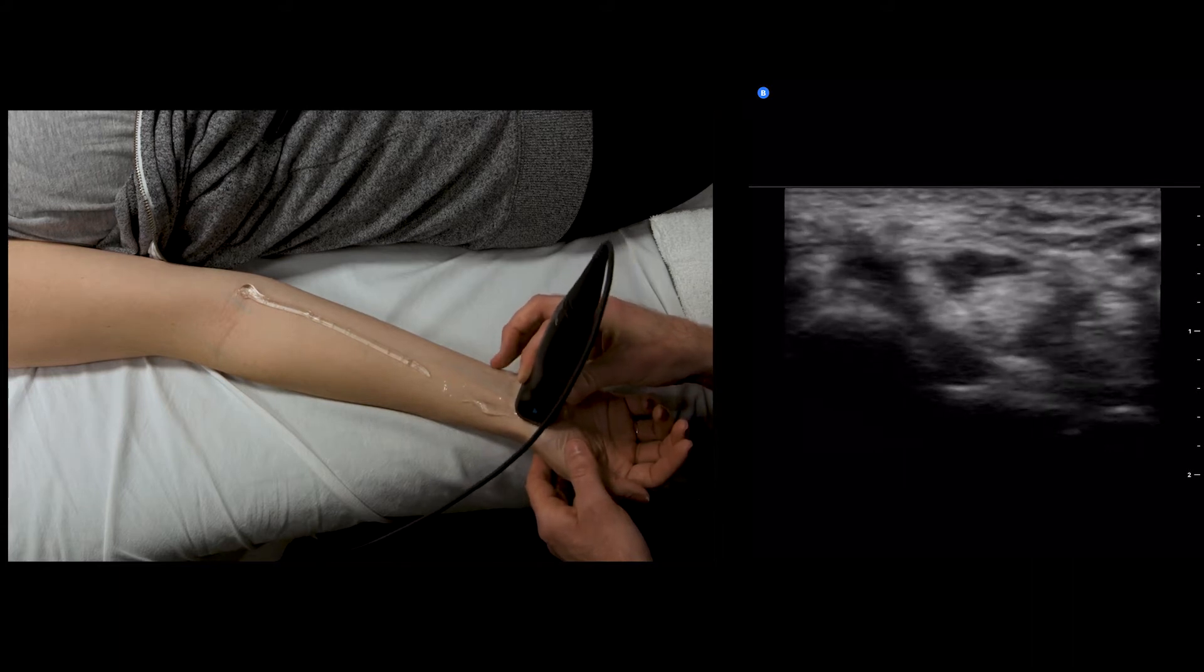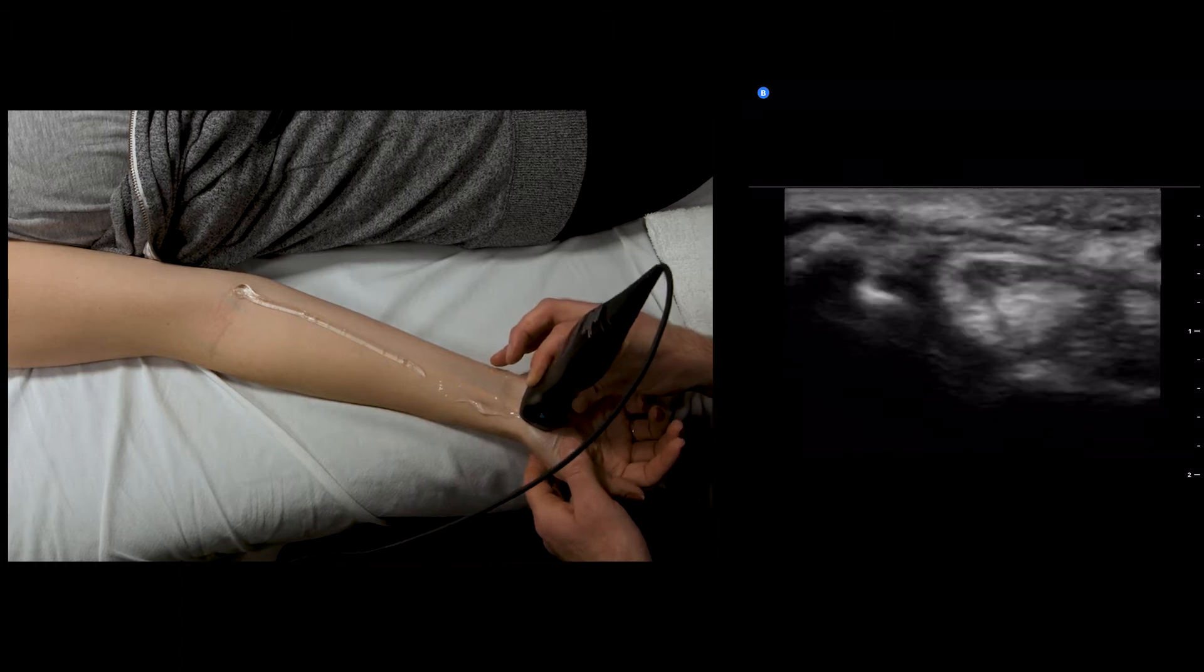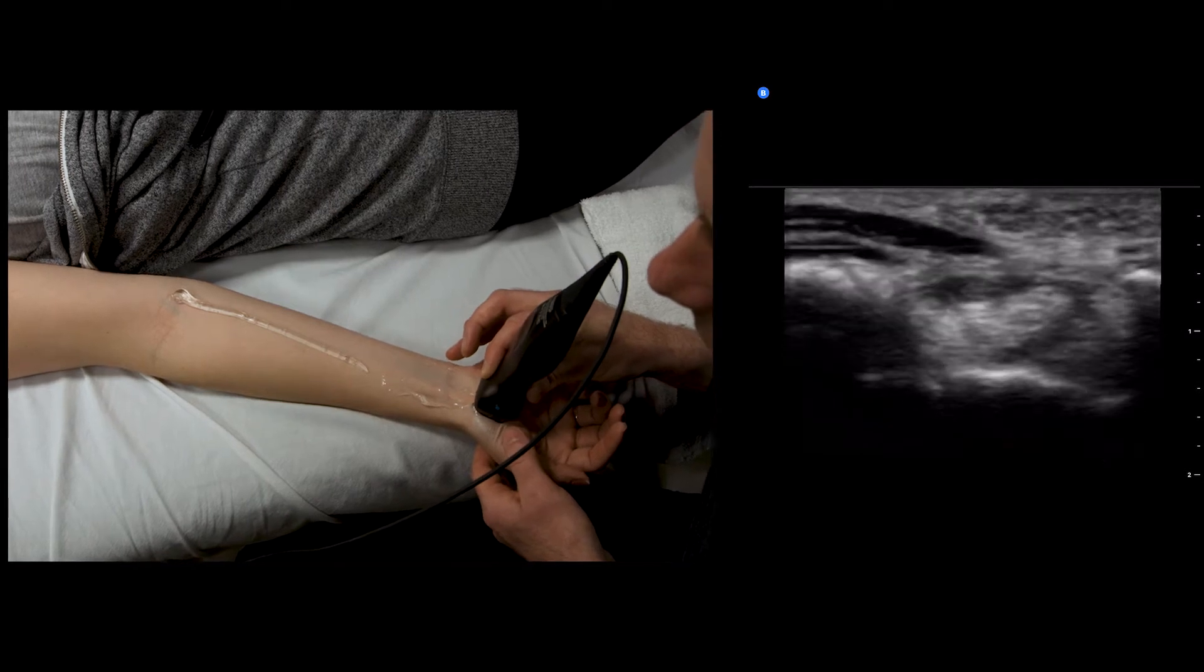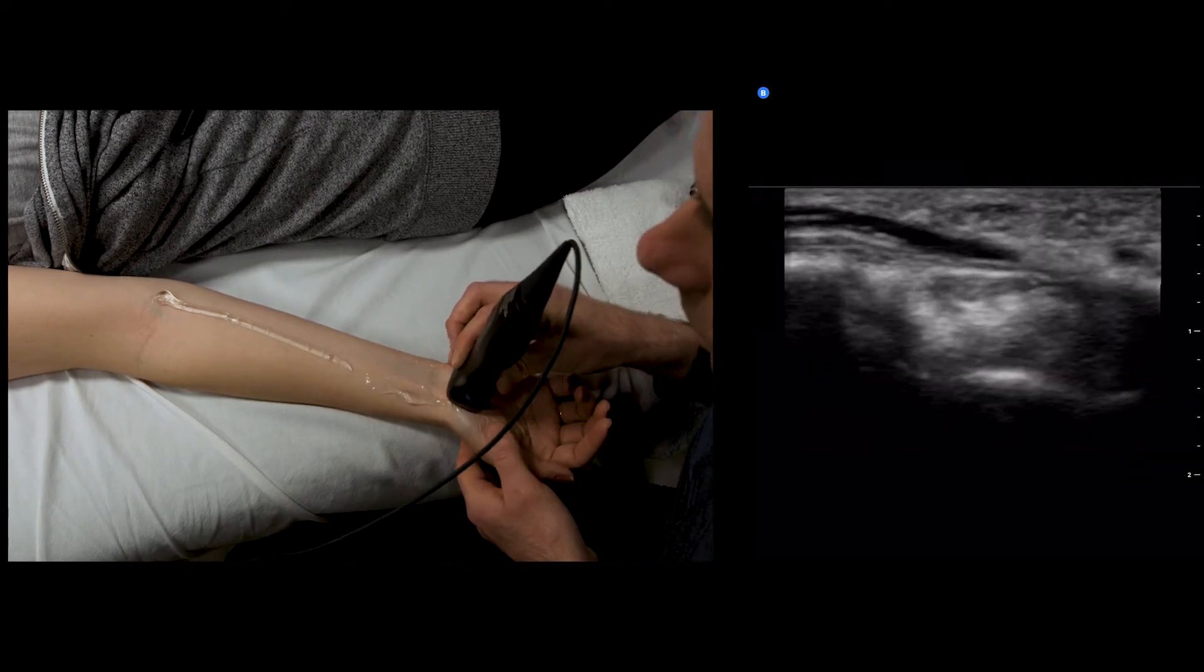When it drops down, we want to wag our transducer to look back up at it. That's going to be the easiest way to see it and make sure that we get good reflections off the nerve itself.